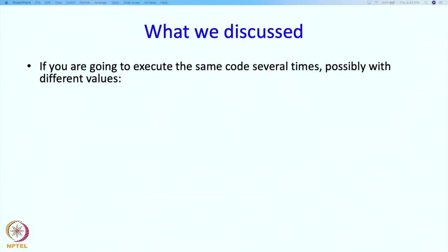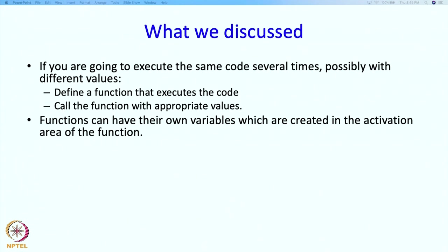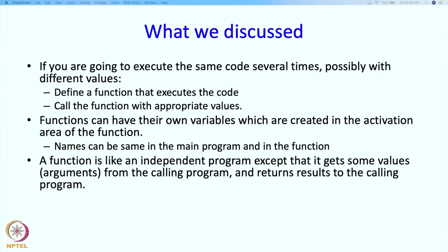So what did we discuss in this segment? We started by saying that if you are going to execute the same code several times, possibly with different values, you define a function. Functions can have their own variables created in the activation frame, and names can be the same in the main program and in functions. A function is like an independent program that gets arguments from the calling program and returns results to it. Next, we are going to talk about reference parameters.